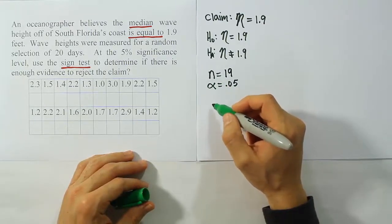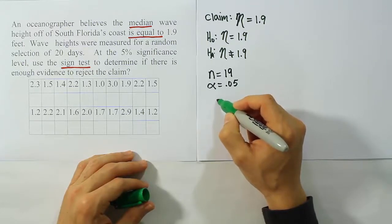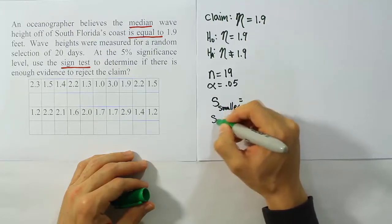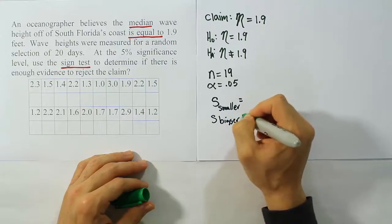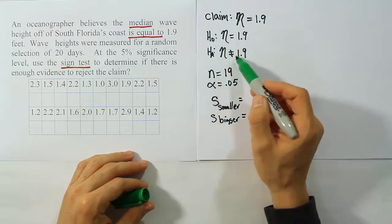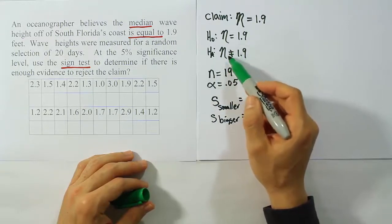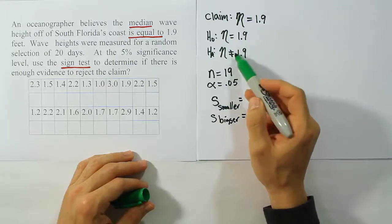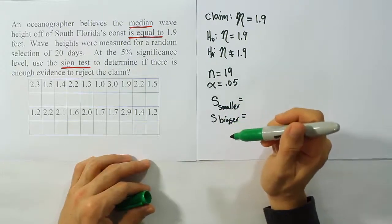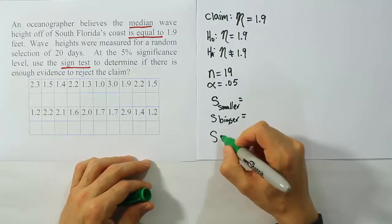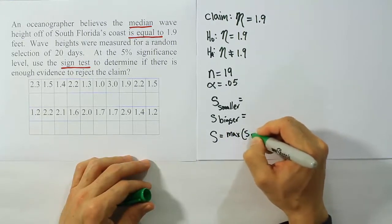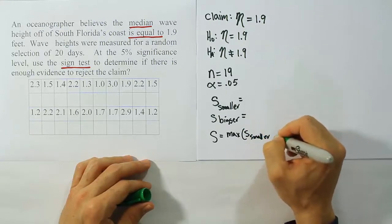Our next step is to calculate the test statistic. To get the test statistic, we have to do a preliminary step, which is S smaller and S bigger. This is only done for the two-tailed hypothesis testing procedure with the sign test. So when it says not equal to, whenever it says not equal to is when we use this procedure.